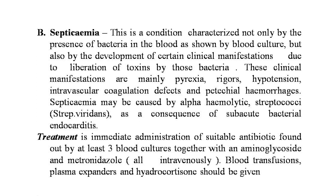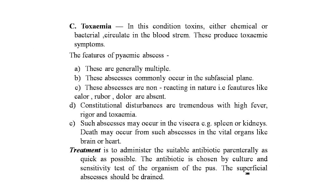Treatment of septicemia: immediate administration of a suitable antibiotic, guided by at least three blood cultures, together with aminoglycosides and metronidazole, all given intravenously. Blood transfusion, plasma expanders, and hydrocortisone should be given. Toxemia: toxins — chemical or bacterial — circulate in the bloodstream producing toxemic symptoms. Features of pyemic abscess: these are generally multiple, commonly occurring in the subfascial plane; they are non-reacting in nature and features like calor, rubor, and dolor are absent. Constitutional disturbances are tremendous with high fever, rigors, and toxemia. Such abscesses may occur in viscera like the spleen or kidneys; death may result from abscesses in vital organs like the brain or heart.